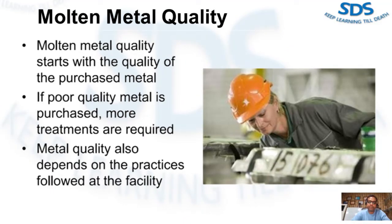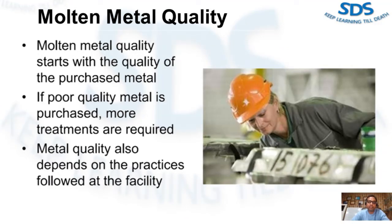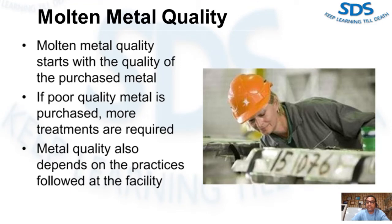After completing this video, you will be able to state three guidelines to follow that ensure metal quality, explain how to restore the correct composition when metal analysis is out of specification, identify the four types of impurities that may occur in molten aluminum die cast alloy and the sources of each, and identify the techniques that can be used to identify the different types of impurities.